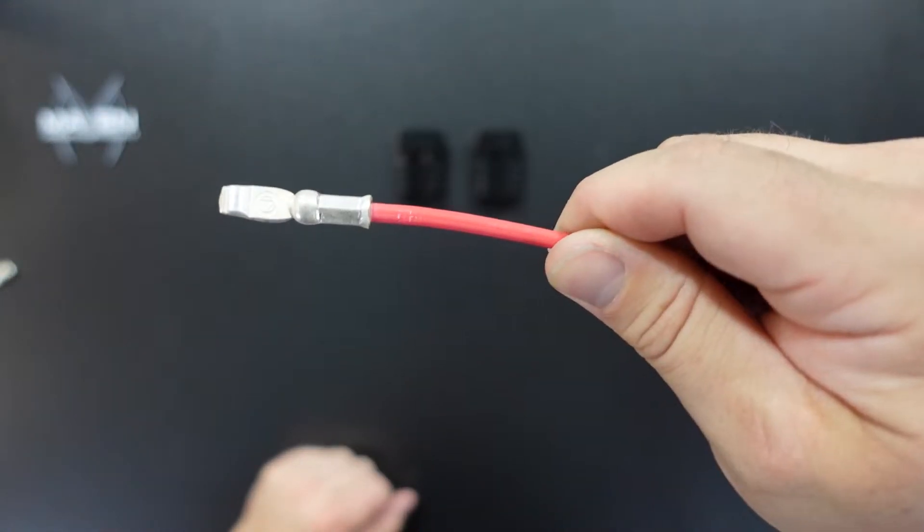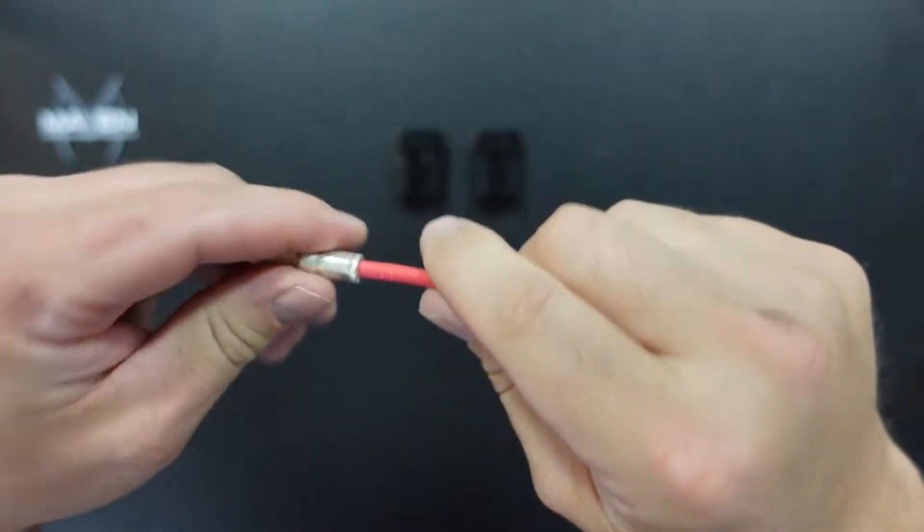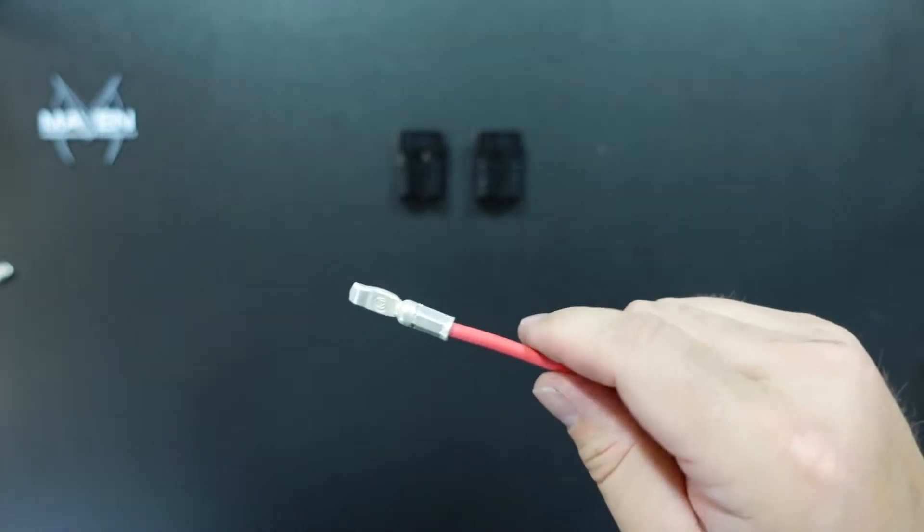Alright, there you can see a good crimp all the way around. This is a hex shape die that we're using. Works out really good. Got a good solid crimp.